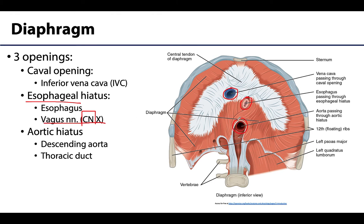Lastly, there is the aortic hiatus, which allows the descending aorta to pass through to supply the lower body. Also traveling through this hiatus is the thoracic duct, which ascends to eventually drain at the venous angle. The thoracic duct is one of the major vessels of the lymphatic system and will be covered in more detail in the lymphatics lecture.